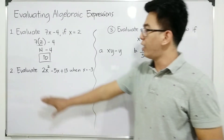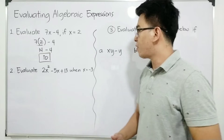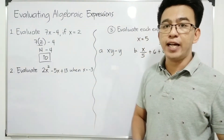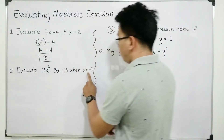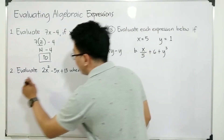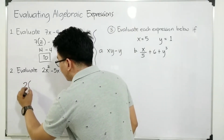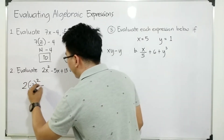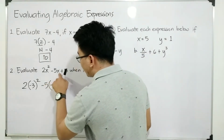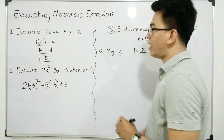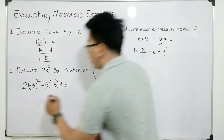Now let's move on with item number 2, wherein we are asked to evaluate 2x squared minus 5x plus 13 when x is equal to negative 3. Again, your x is equal to negative 3, therefore we need to replace this variable x by negative 3. So what will happen is: copy the coefficient 2, replace x by negative 3 — that is 2 times negative 3 squared minus 5 times negative 3. And then simplify: negative 3 squared is negative 3 times negative 3, that is 9.